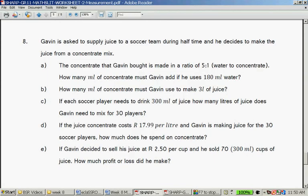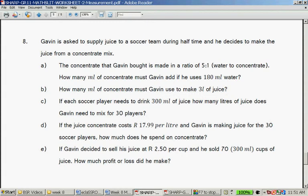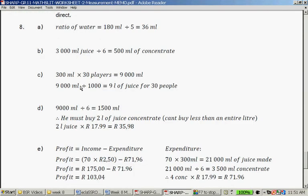How many milliliters of concentrate must Gavin use to make 3 litres of juice? Juice is made up of 6 parts. 5 water, 1 concentrate. So, 5 plus 1 is 6, so you take the 3 litres or 3,000 milliliters divided by 6 and that gives you one part and that's exactly what you want. 3,000 milliliters of juice divided by 6 is 500 milliliters of concentrate. If each soccer player needs 300 milliliters of juice, how many liters of juice does Gavin need to mix for 30 players? 300 times 30 and that will give us 9,000 milliliters divided by 1,000, give us 9 litres of juice.